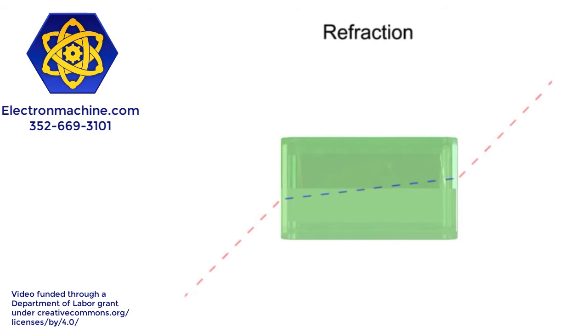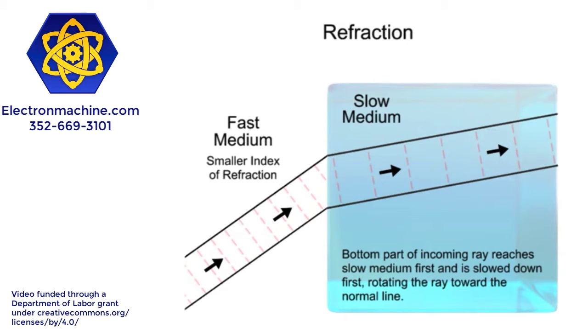To better visualize this phenomenon, let's look at this diagram. As a beam of light reaches the surface of a medium, the lower portion enters first and is slowed down. However, the upper portion is still traveling at the speed of light until it arrives at the surface and enters. This speed difference at the top and bottom aspects of the light path causes it to pivot, bending toward what is referred to as the normal. This is an imaginary line drawn perpendicularly to the surface of the material.